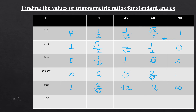For cot θ, we know cot θ = 1/tan θ, so we take the reciprocal of the tangent values. Cot 0° is undefined (1/0); cot 30° = √3; cot 45° = 1; cot 60° = 1/√3; and cot 90° = 0.